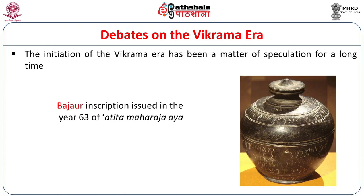The initiation of all the eras of reckoning in early India are debated. There are several controversies regarding the commencement of the dates of each era, and Vikrama Sambath is no exception. The initiation of the Vikrama era has been conceived particularly in the light of a very important inscription from Bajaur, issued in the 63rd regnal year of one Maharaja, the king Aya. This inscription is dated in his Atita Rajya — the expression being the 63rd year of Atita Maharaja Aya — which means the inscription was dated in the expired year of this Maharaja Aya.